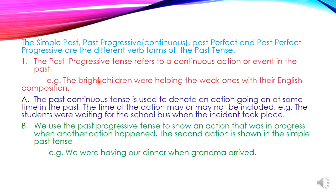When can we use the past progressive tense? First usage: the past continuous tense is used to denote an action going on at some time in the past. The time of the action may or may not be included. Example: the students were waiting for the school bus when the incident took place. Second usage: we use the past progressive tense to show an action that was in progress when another action happened. The second action is shown in the simple past tense.